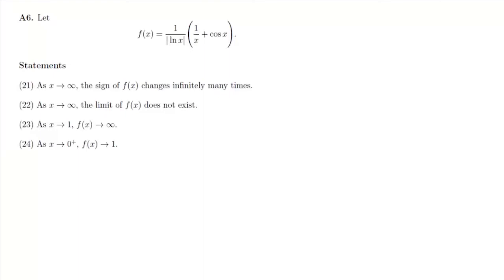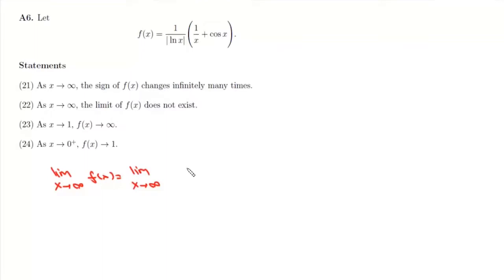For the sixth question, we are given the function f(x) = 1 / (|log x| · (1/x + cos x)). We can take the limit as x tends to infinity. When x is positive, |log x| is simply log x, so it becomes 1/(log x · (1/x)) + 1/(log x · cos x).